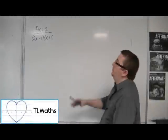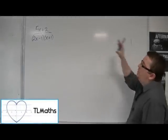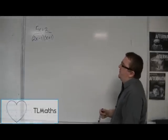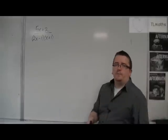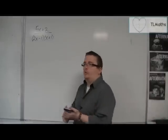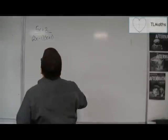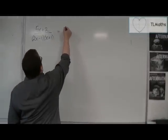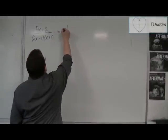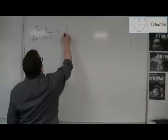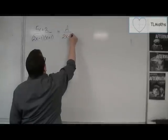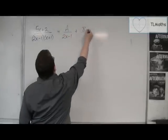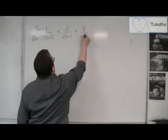Let's see another example. I'm going to write (5x + 2) / ((2x - 1)(x + 1)) as partial fractions. So I'm going to be able to write this as some number over (2x - 1) plus some number over (x + 1).